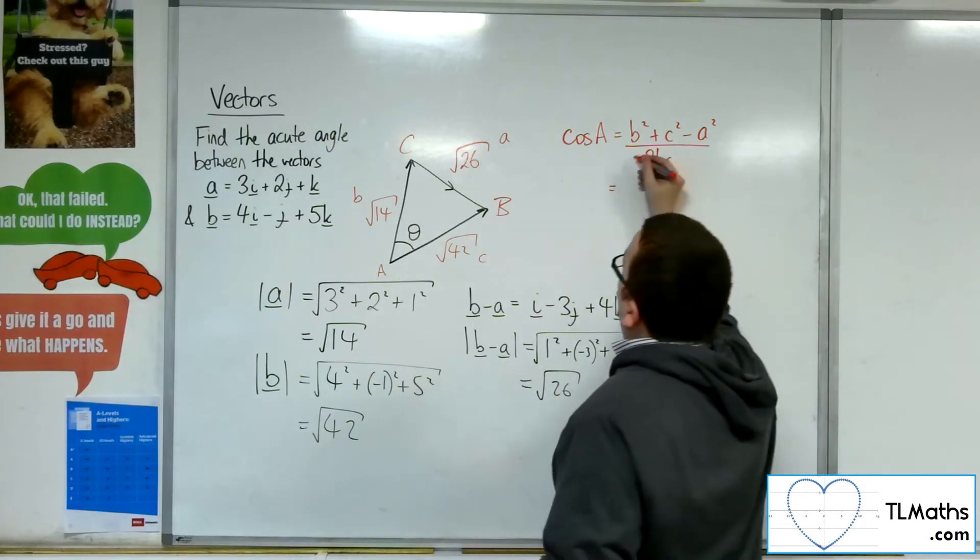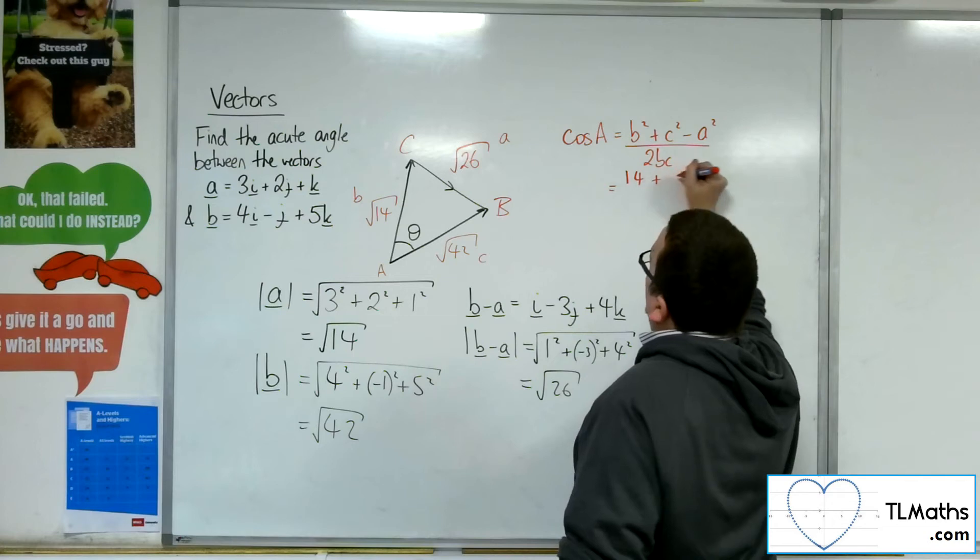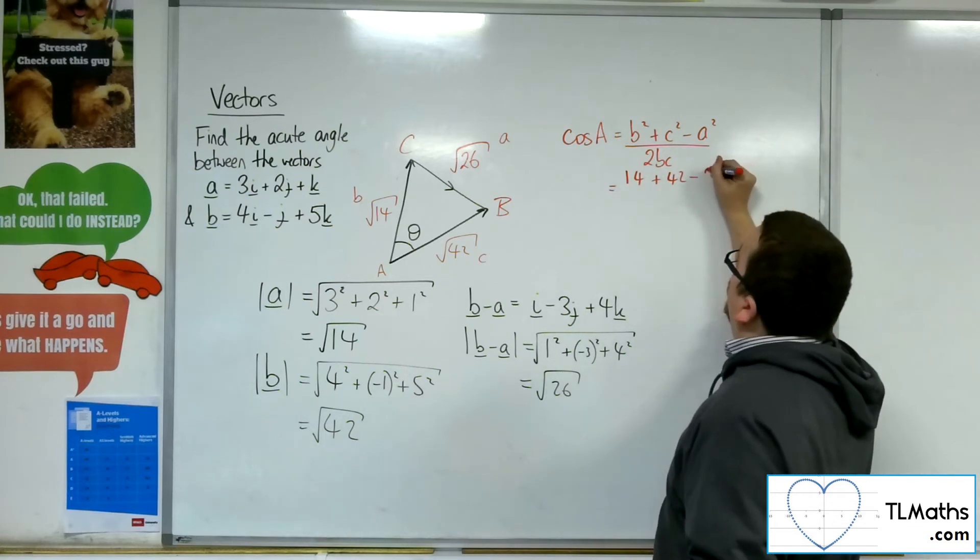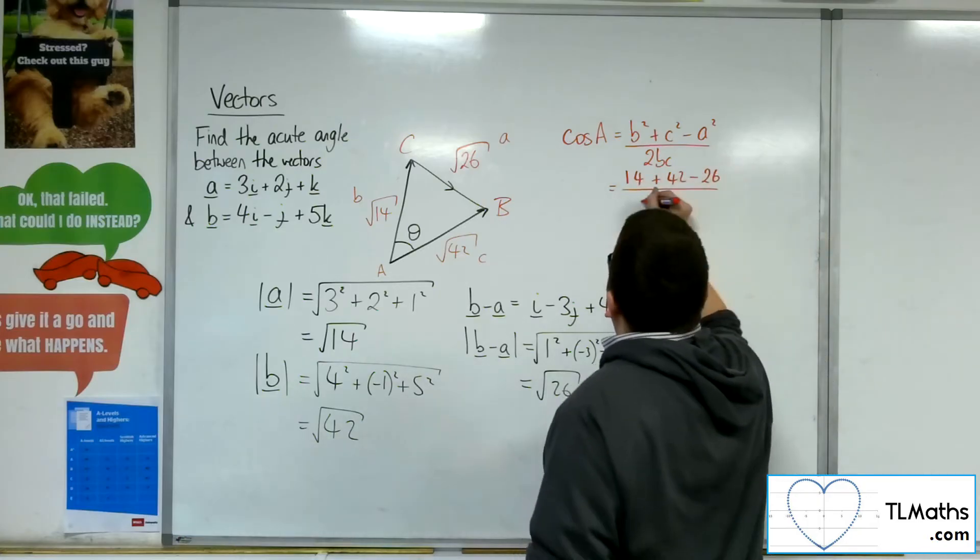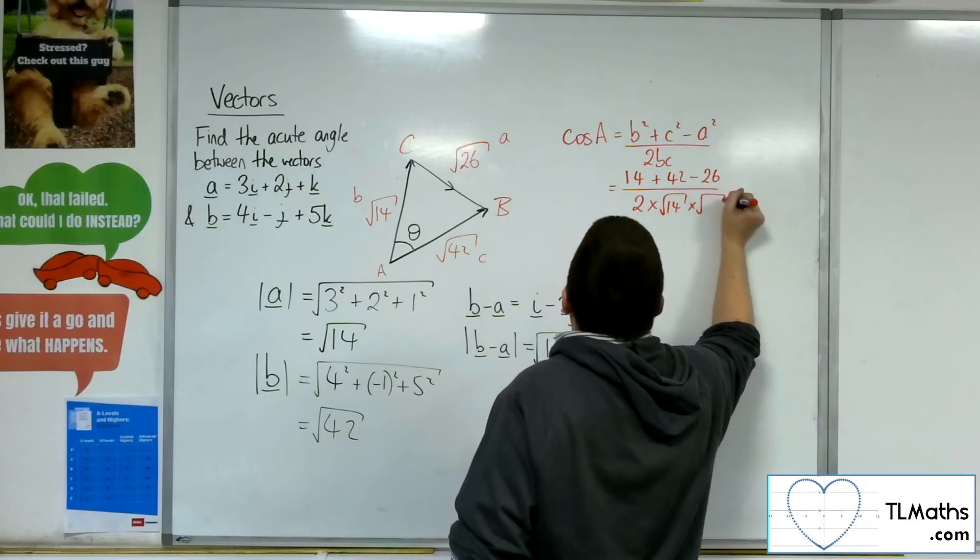So we've got B squared, so that would be root 14 squared, so 14, plus root 42 squared, so 42, take away A squared, so 26, all over 2 times root 14 times root 42.